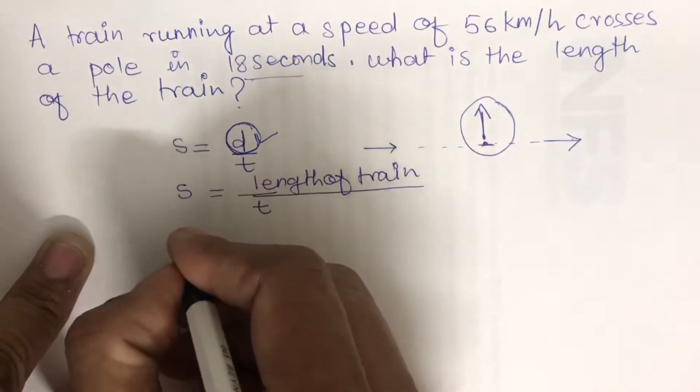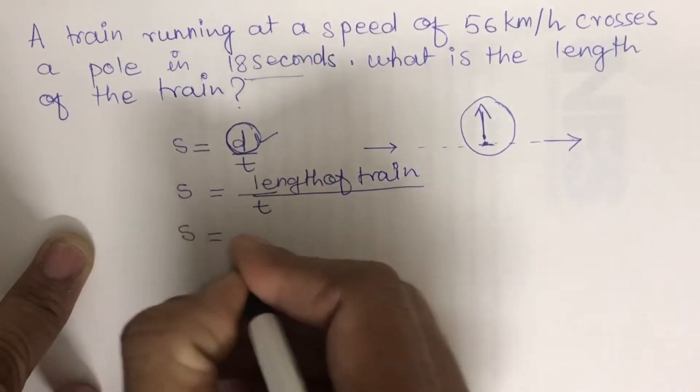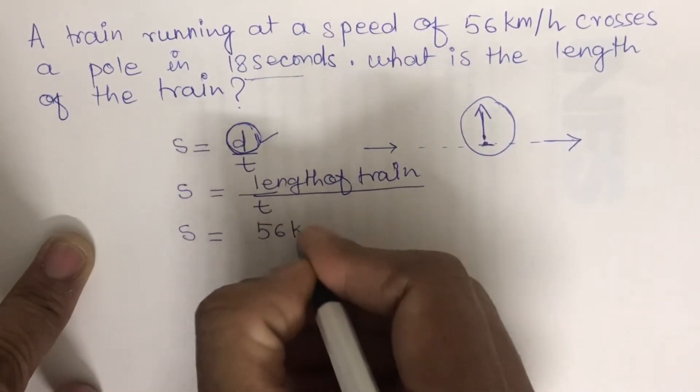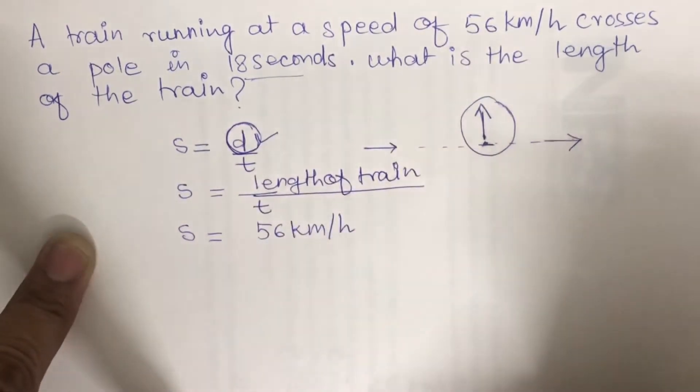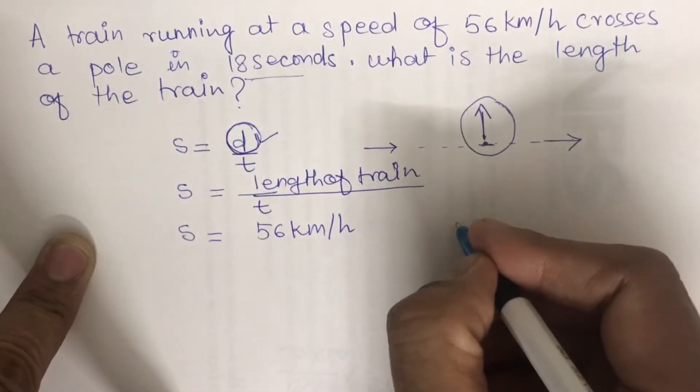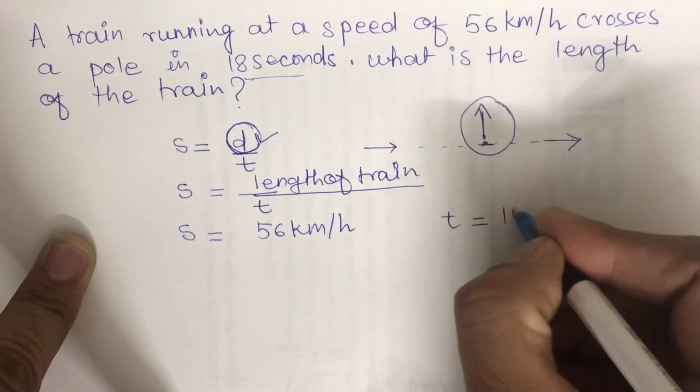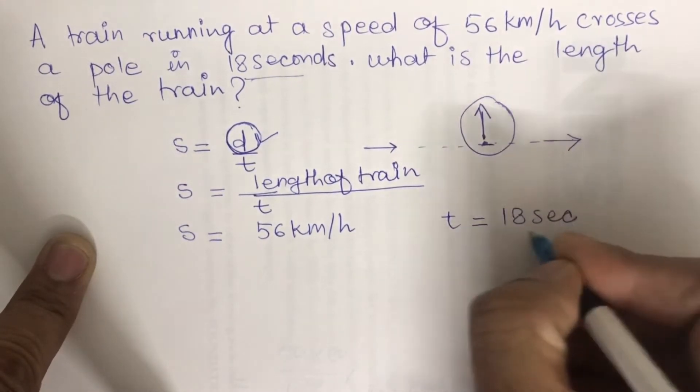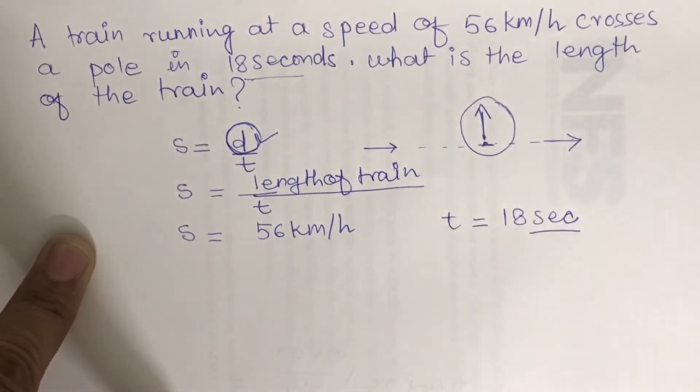Speed is given as 56 kilometers per hour, and time is given as 18 seconds. These are in different units.